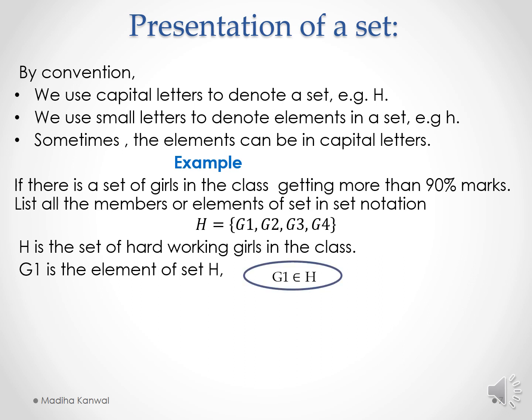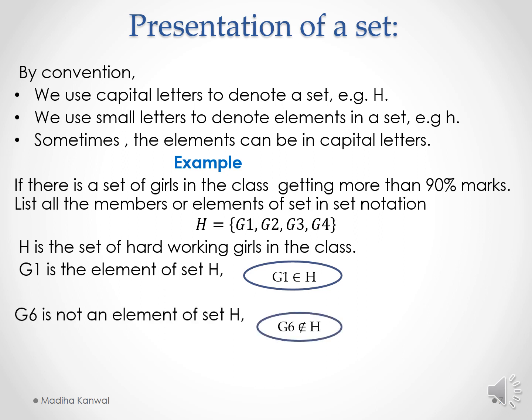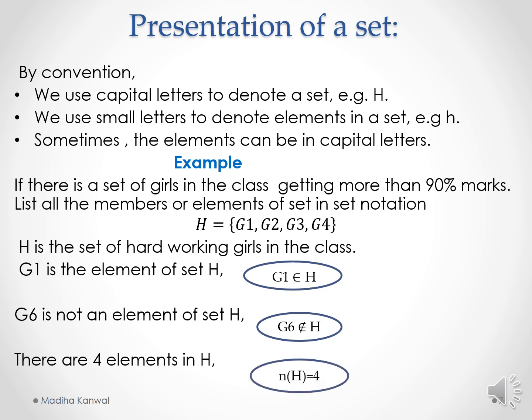So G1 is an element or member of H. G6 is not an element of H, so we write that G6 is not a member of H. There are four elements in H: G1, G2, G3, and G4. So the number of elements in set H is equal to 4.